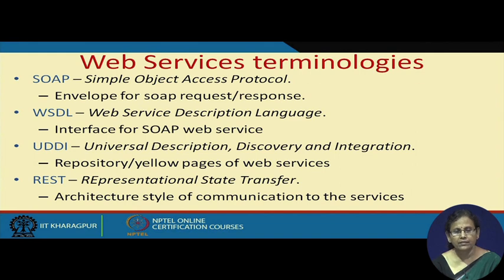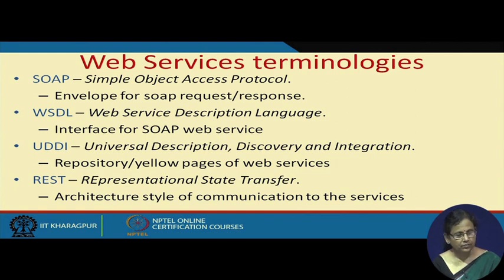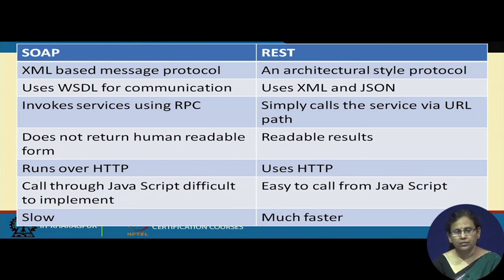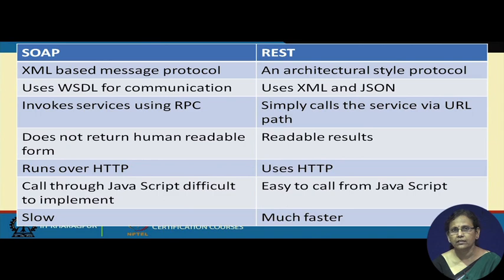REST, which stands for Representational State Transfer, is a completely different kind of protocol. It is an architectural style for communicating with services, meaning it specifies a specific way of communicating. Comparing SOAP with REST: SOAP is an XML-based message protocol where XML files are generated and sent, whereas REST is an architectural style that simply tells how to do things. REST can send data in both XML and JSON format.